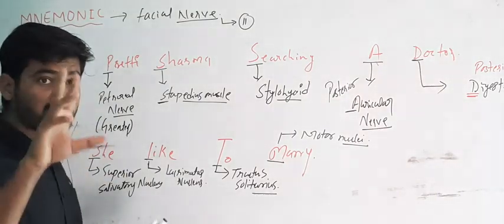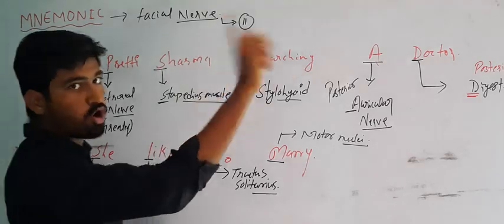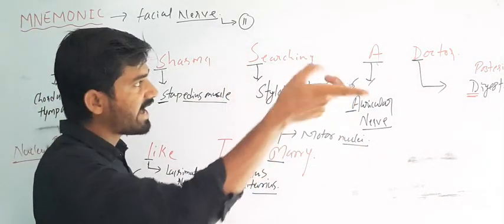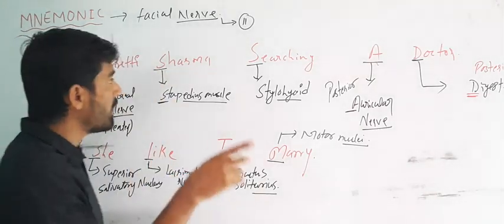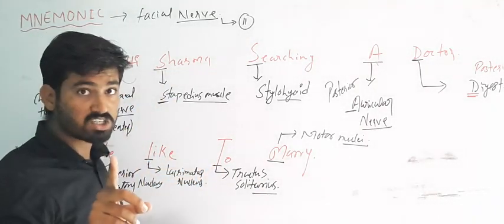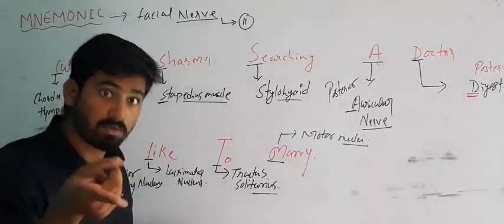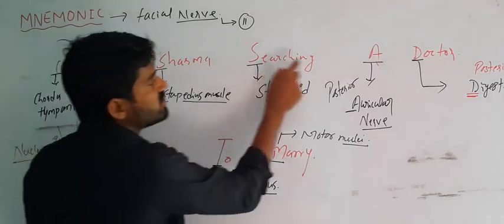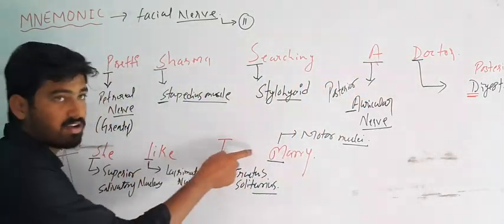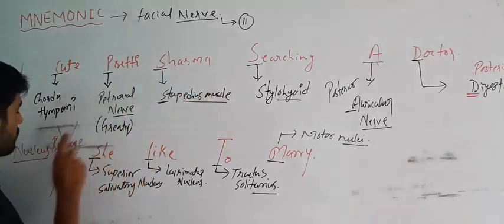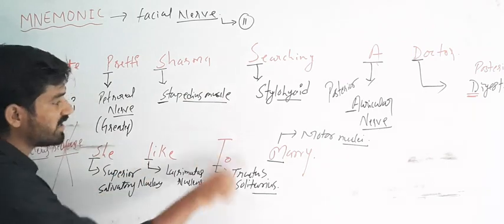So in the facial nerve you have to remember the 11 branches — 6 branches from the mnemonic 'Cute Preeti Sharma searching a doctor,' plus 5 terminal branches that everyone knows. Whenever the examiner asks, tell me the branches of the facial nerve — everyone tells only the terminal branches, but before that there are 6 branches. And there are 4 nuclei — represented by 'C like to marry,' giving C, L, T, M — that is 4 nuclei.